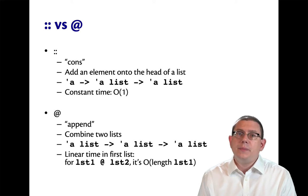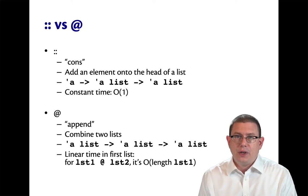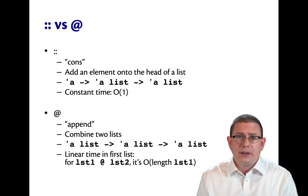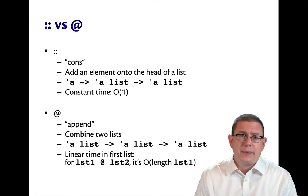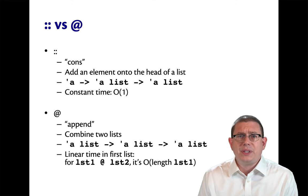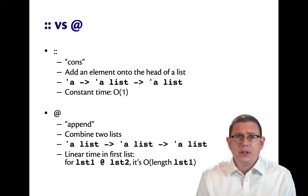We'll see the implementation next week, but for now it's constant time — it's very fast. If you remember how singly linked lists are implemented, this should come as no surprise. All you have to do is allocate a node and install a pointer.